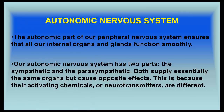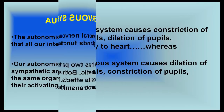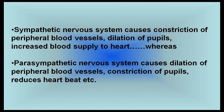The autonomic nervous system ensures that all our internal organs and glands function smoothly. It has two parts: the sympathetic and the parasympathetic, which supply essentially the same organs but cause opposite effects because their activating neurotransmitters are different. For example, the sympathetic nervous system causes constriction of peripheral blood vessels, dilation of pupils, and increased blood supply to the heart, whereas the parasympathetic nervous system causes dilation of peripheral blood vessels, constriction of pupils, and reduced heartbeat.